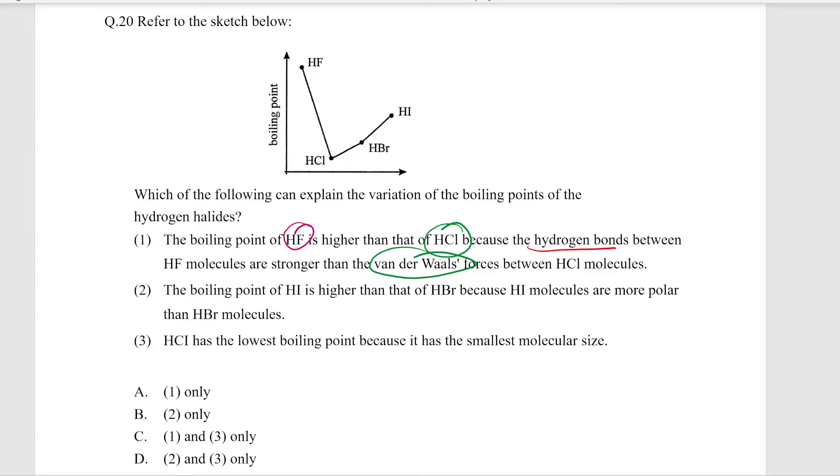Option two says the boiling point of HI is higher than that of HBr because HI molecules are more polar than HBr molecules. Of course, this is not the reason. The reason behind is because of its molecular size.